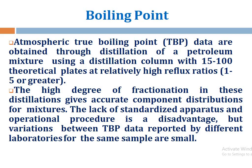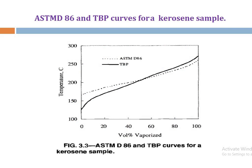Regarding boiling point: the True Vapor Pressure (TVP) data are obtained through distillation of petroleum mixtures using a distillation column with 15 to 100 theoretical plates at relatively high reflux ratios of 1 to 5 or greater. The lack of standardized apparatus and operational processes is a disadvantage. This is illustrated by the ASTM D-86 TVP curve, which shows that as temperature increases, the volume of vaporization increases.